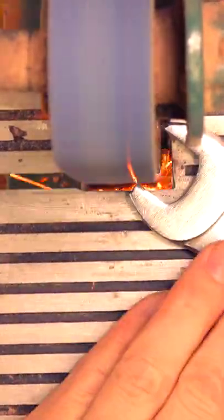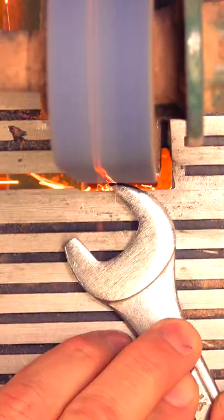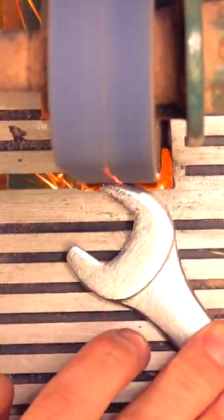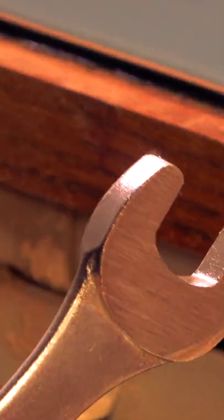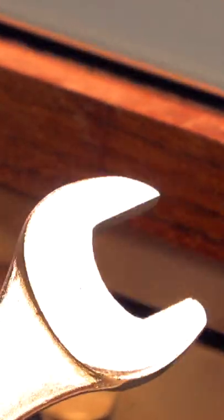Instead, grab an old wrench and modify it. We'll grind away part of the upper jaw and sharpen the lower. Adding a grind to both sides of the head will give us sharper edges that we'll want for lateral cutting.